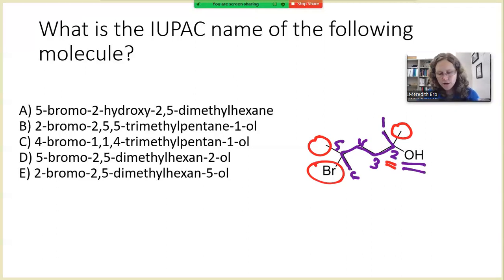So that means that I know I have a 2-methyl on my chain. I have a 5-methyl. And I have a 5-bromo.